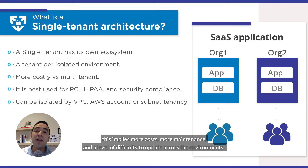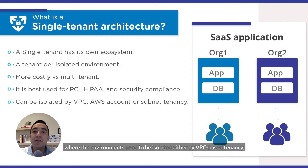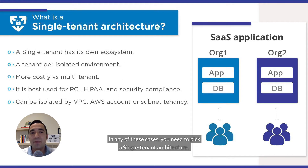Additionally, this implies more cost, more maintenance, and a higher level of difficulty to update across environments. Take note: the best case to leverage a single-tenant architecture is when you have a PCI or HIPAA application, where the environment needs to be isolated either by VPC-based tenancy, AWS account-based tenancy, or subnet-based tenancy. In any of these cases, you need to pick a single-tenant architecture.